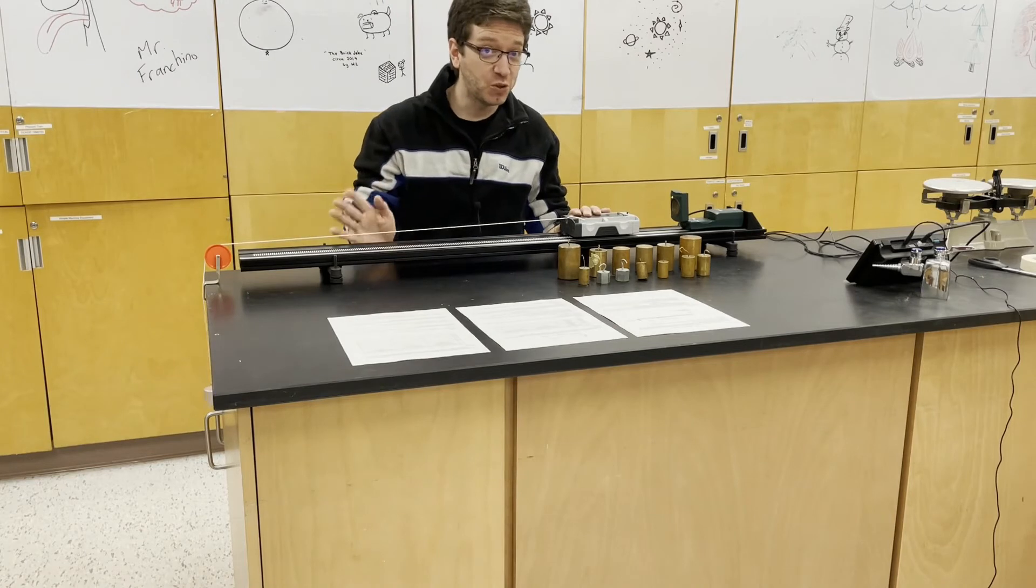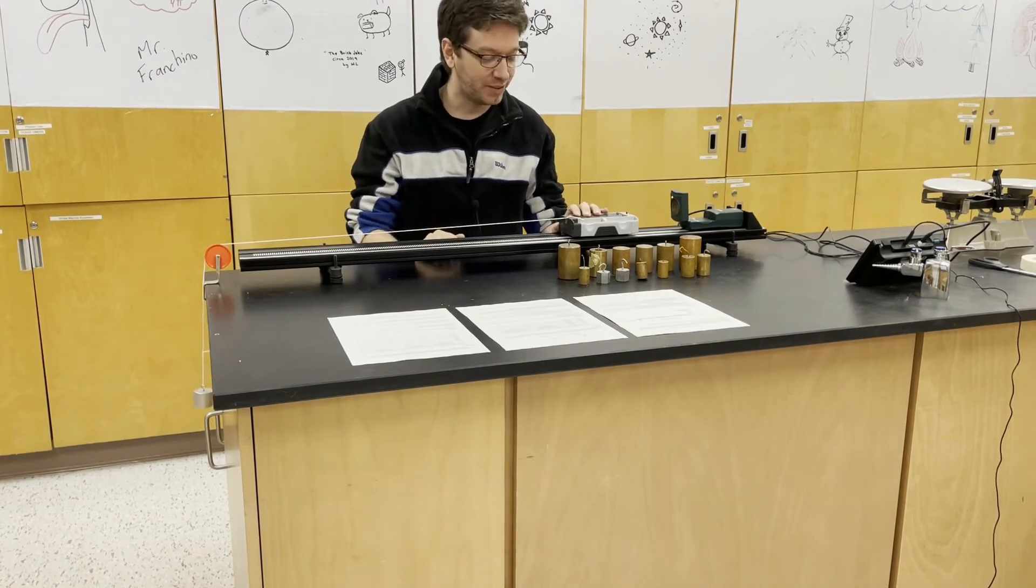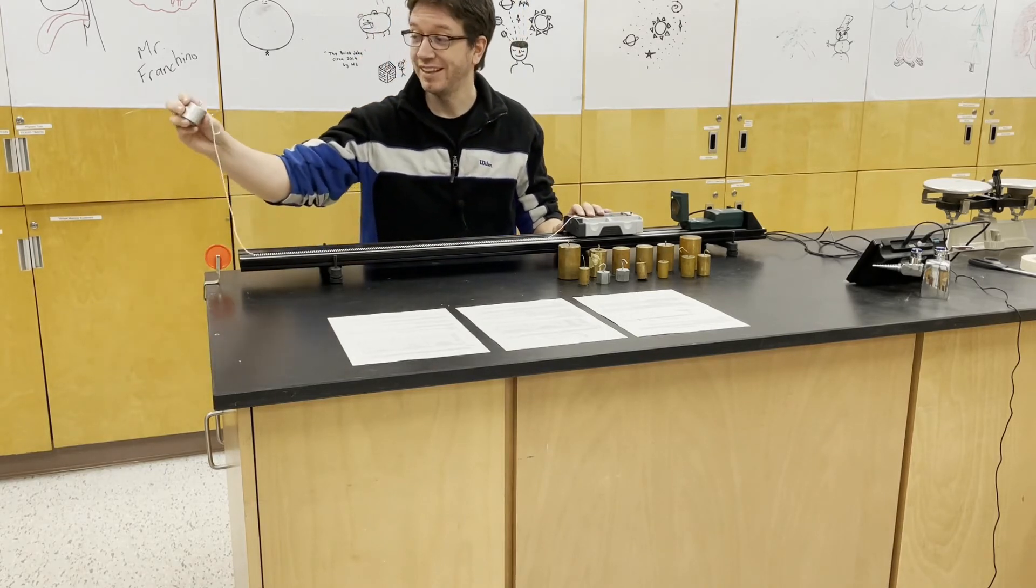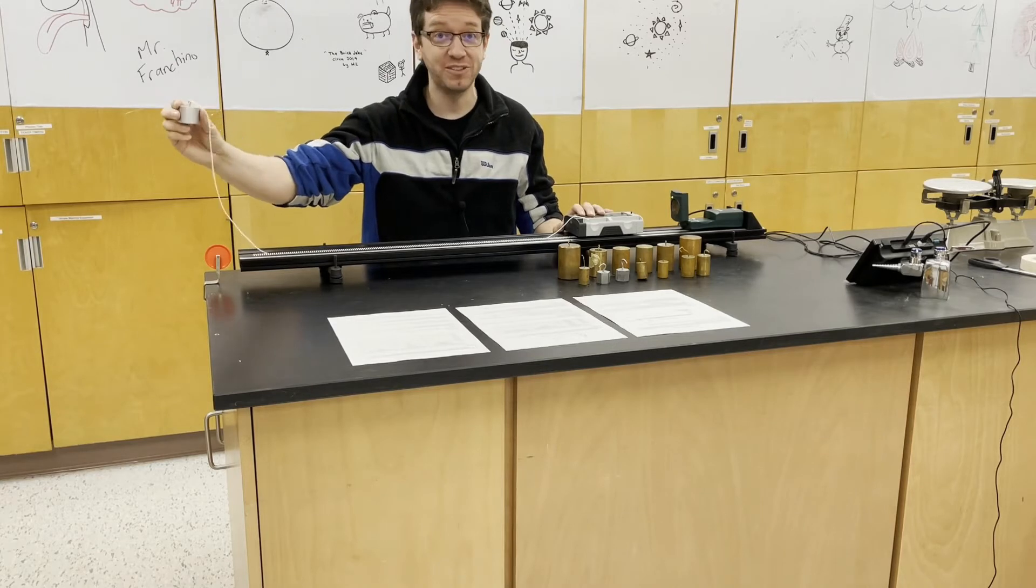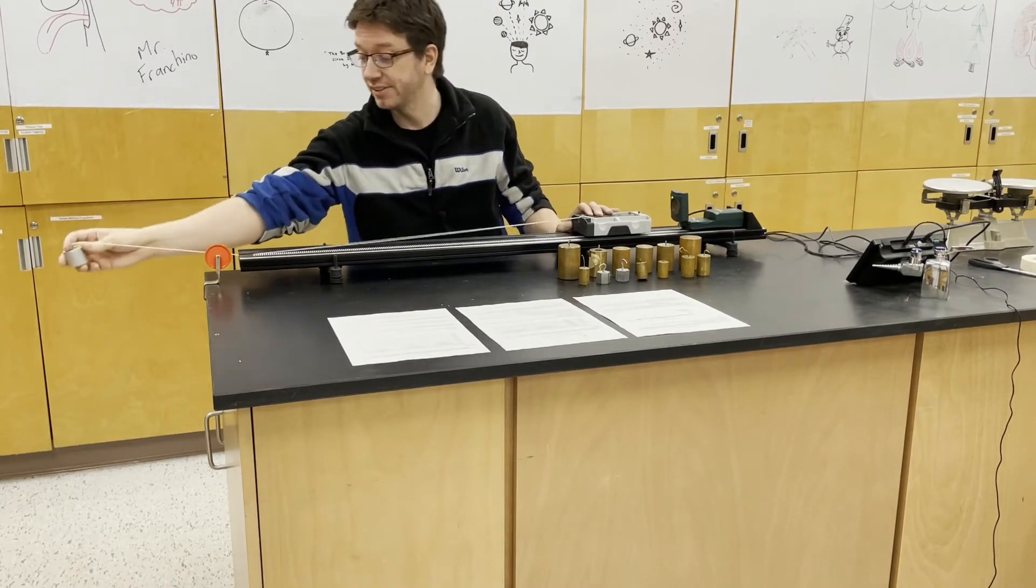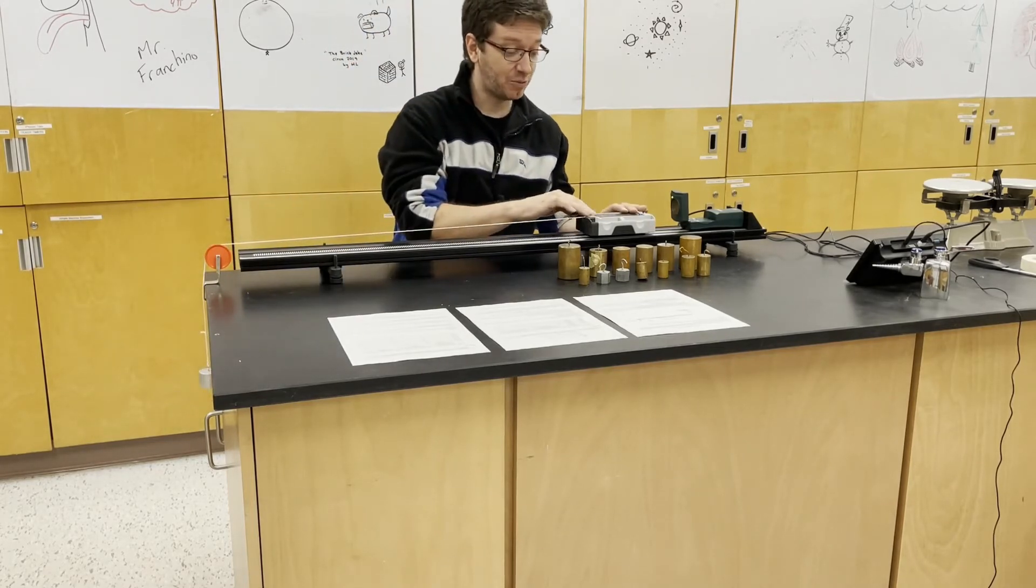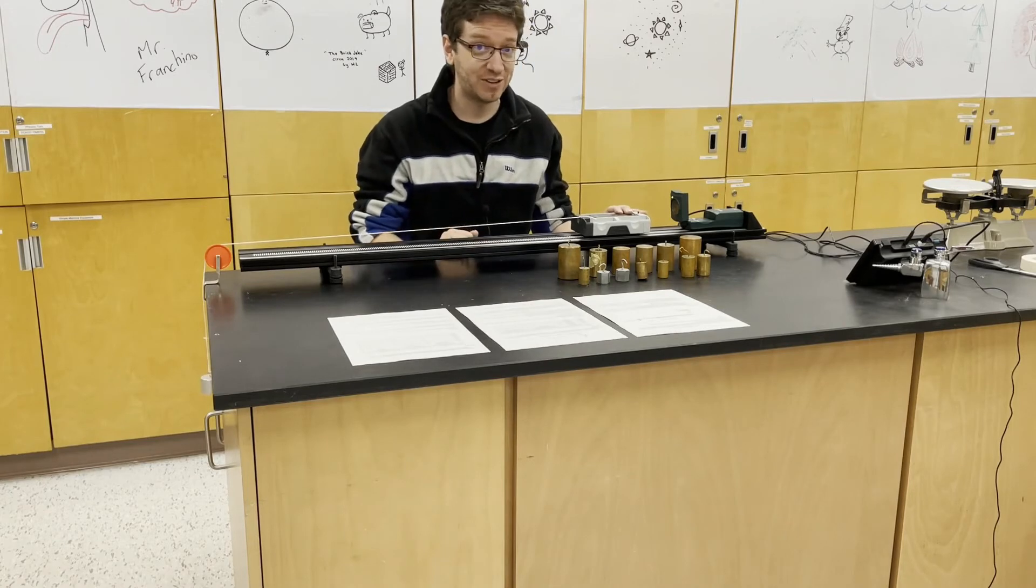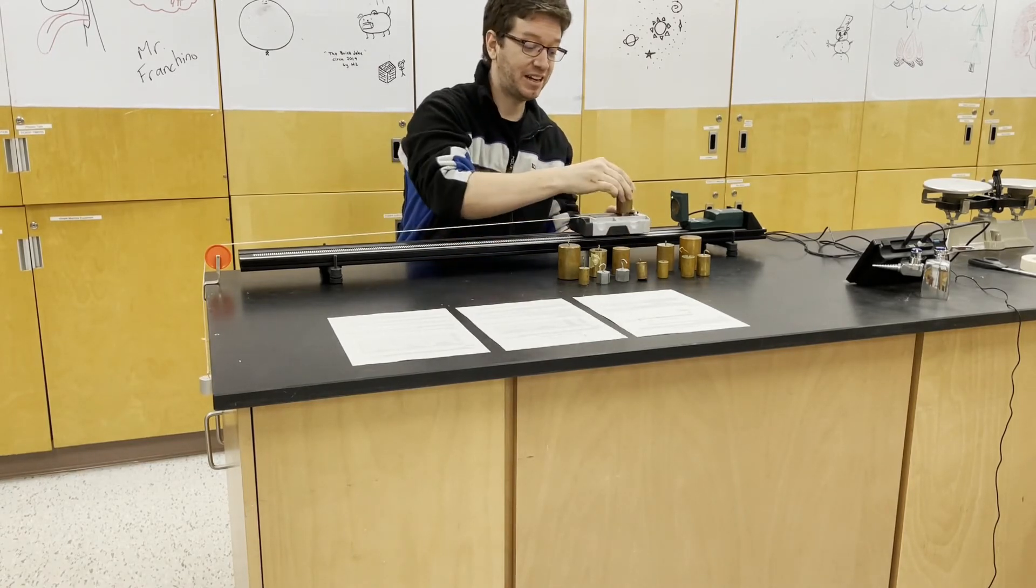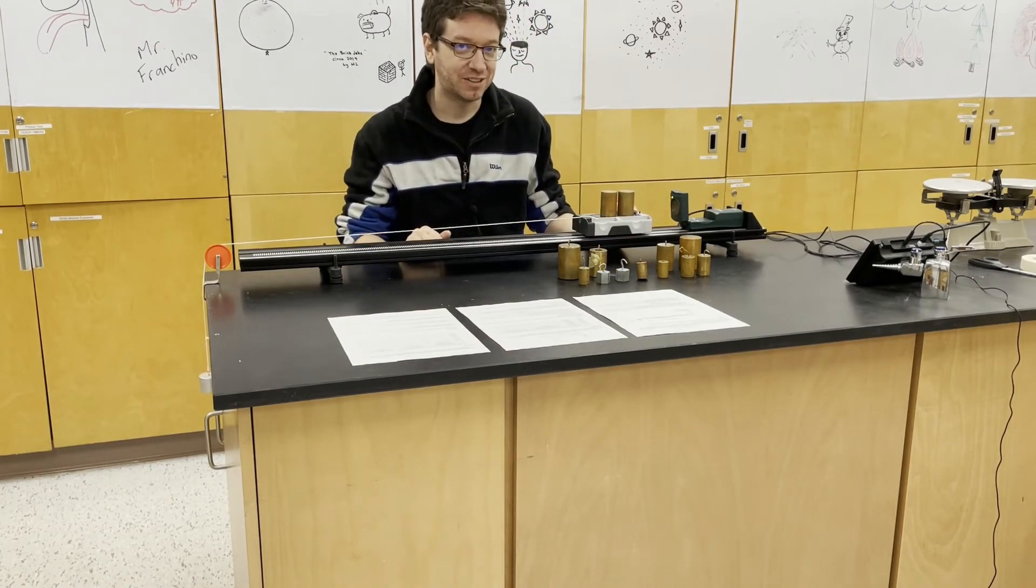Alright, so for part two of the lab, we're going to see how mass affects acceleration. And how we're going to do that is by keeping the net force constant. So the hanging mass will always be 100 grams, meaning the net force will always be 0.98 Newtons. And that will never change. What will change is I will start with our 260 gram cart and then I'll add 500 grams. And then I will add another 500 grams and so on to see how that affects acceleration.